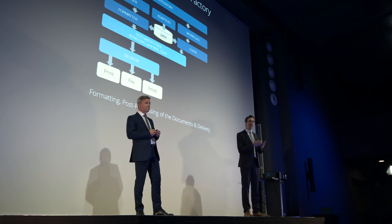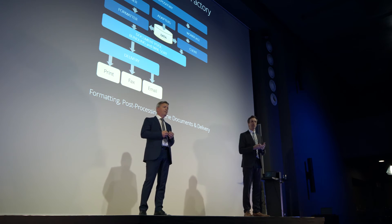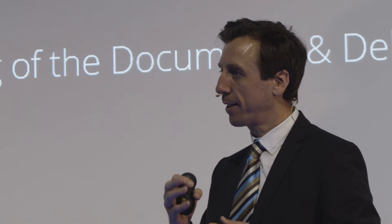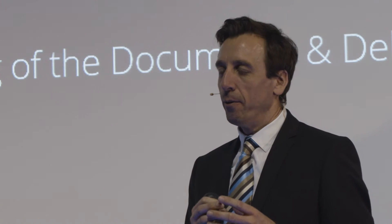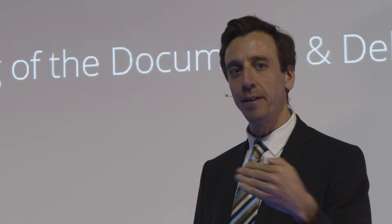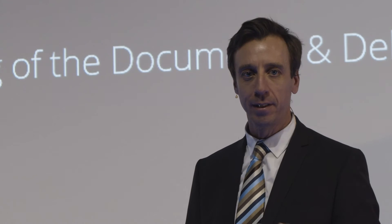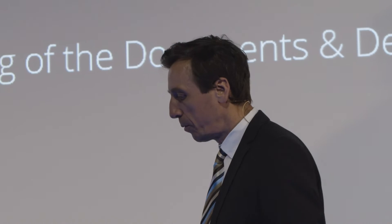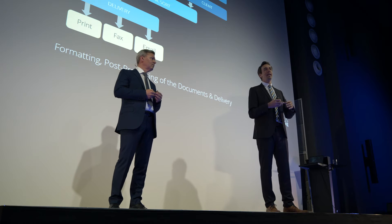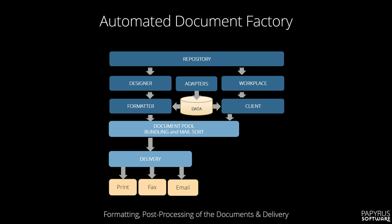The document pool is where we're collecting everything before sending it. Here we can do sorting, bundling, post-processing, reordering, we can augment some of the content, and we can wait for other bits of content to come in — maybe another batch in Papyrus that's coming. We need to wait in the document pool for that batch to arrive so we can bundle everything together. Maybe you've got external content coming in — a Word document or an external PDF. The document pool is a really important place where we take stock, make sure we've got everything, determine which output channel we need for which document, and start the delivery process.